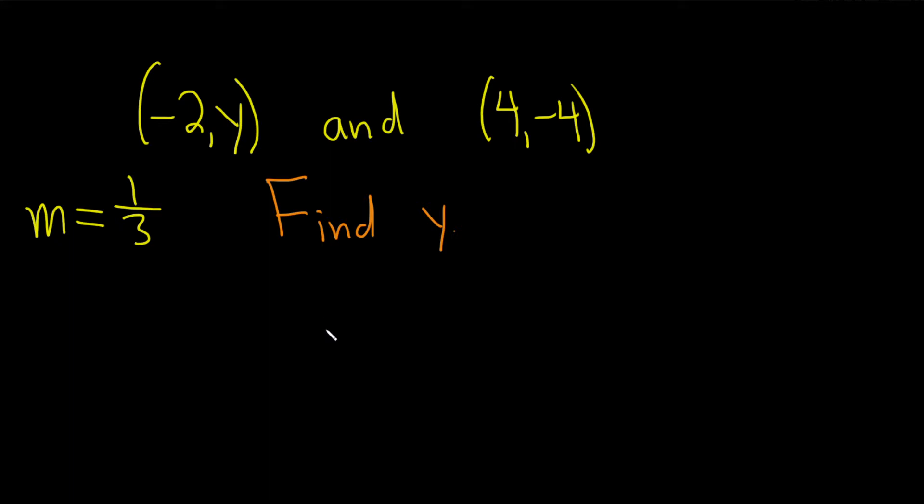So we'll start by writing down the formula for the slope. m equals, well basically you subtract the y's, so y2 minus y1, then you divide, and then you subtract the x's, so x2 minus x1.